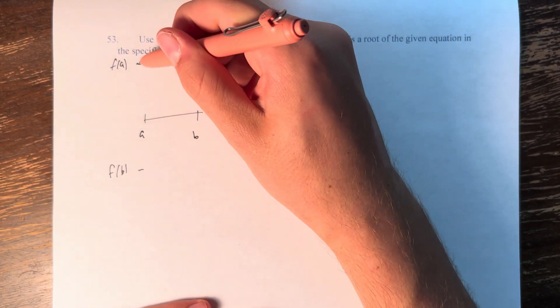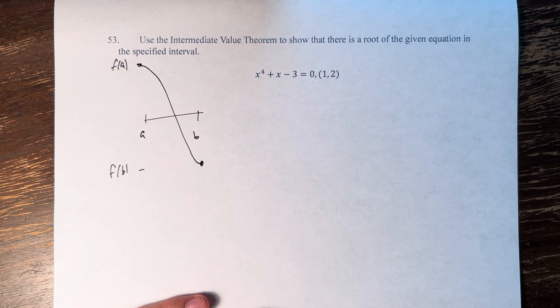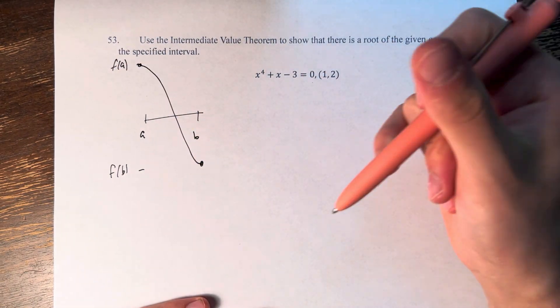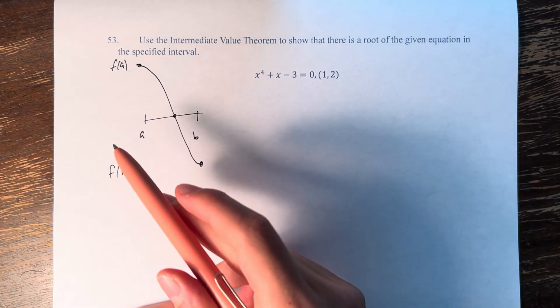then we know at some point in the interval, if the function is continuous, you're going to hit 0 at one point. And therefore, there is a root in this interval.